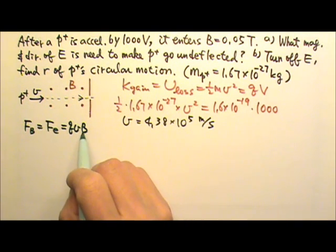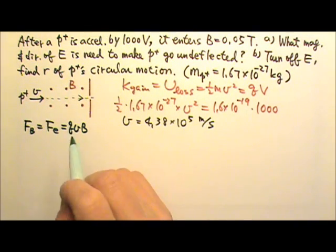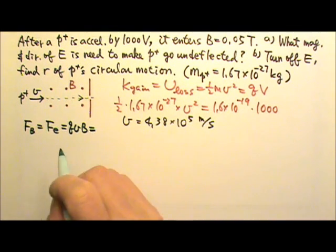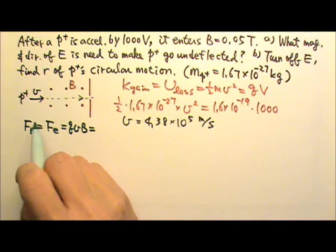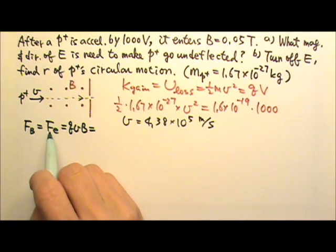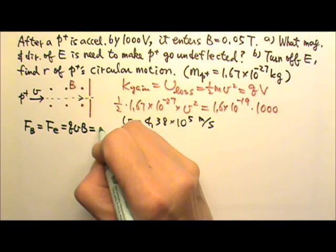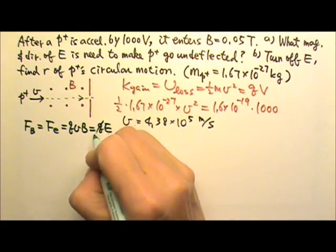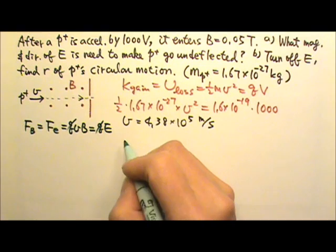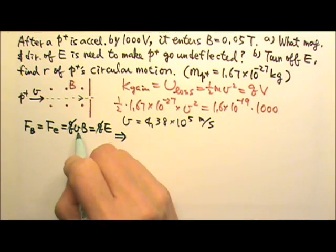The sine is sine 90 degrees, which is 1, so it's just qvB equals the electric force. For a charge in an electric field, the electric force is q times E. So the q's cancel, that means vB...